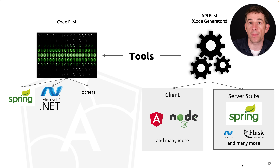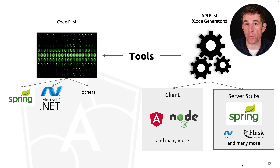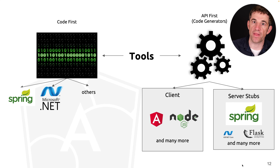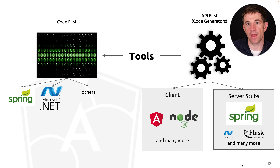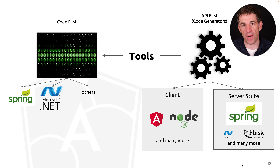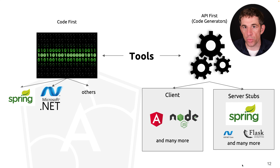The other approach, which we especially find in larger environments, is the API-first approach. With that approach we don't start with the implementation, but we create the specification first. Then we have code generators that are able to generate client modules for different frameworks and technologies, but also so-called server stubs — they create the skeleton for the backend where we can then add our business logic.